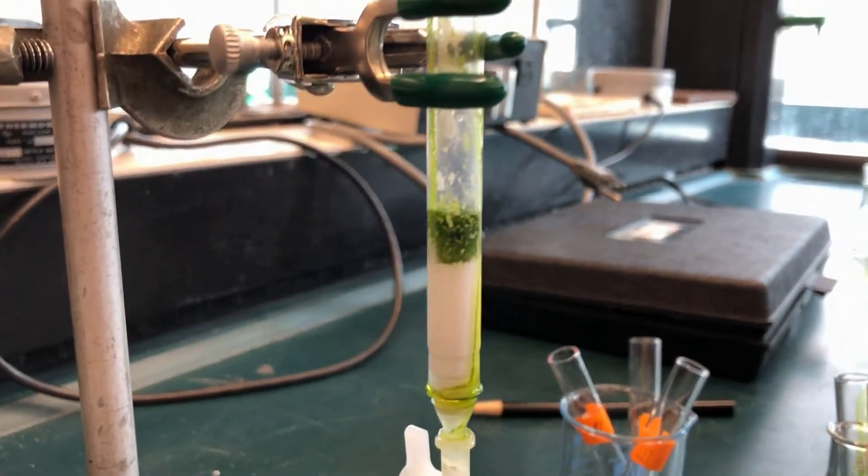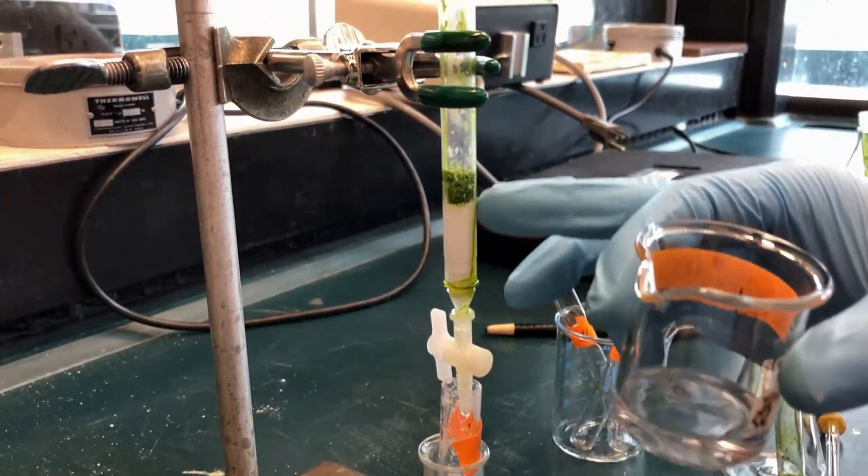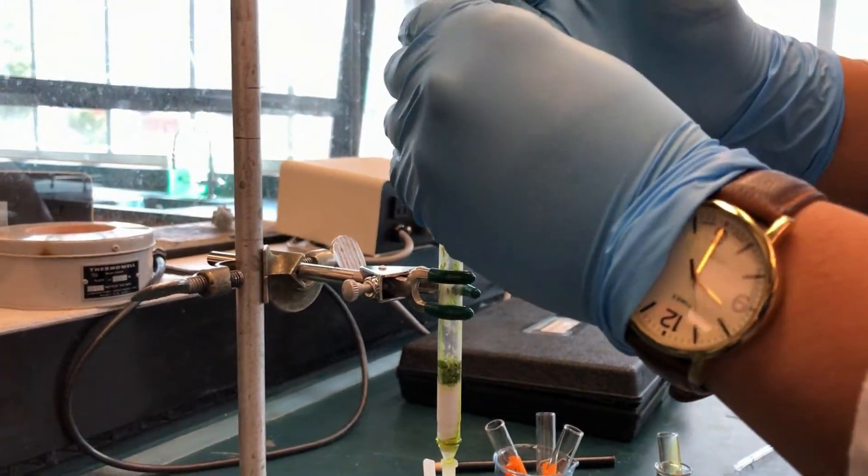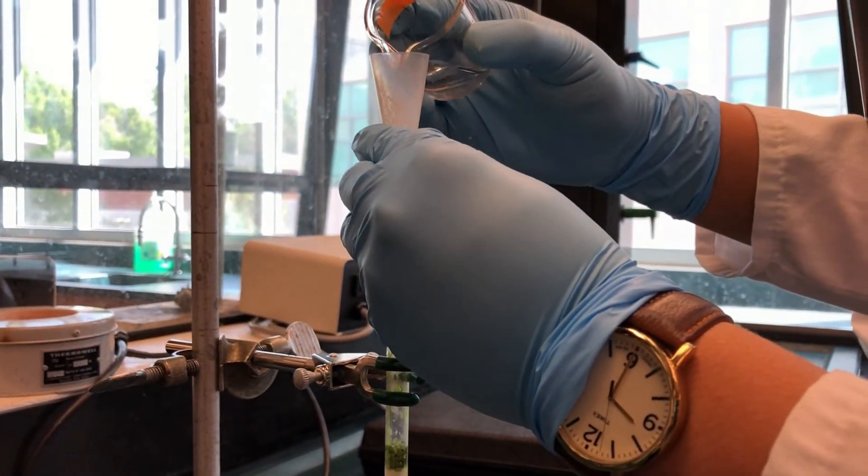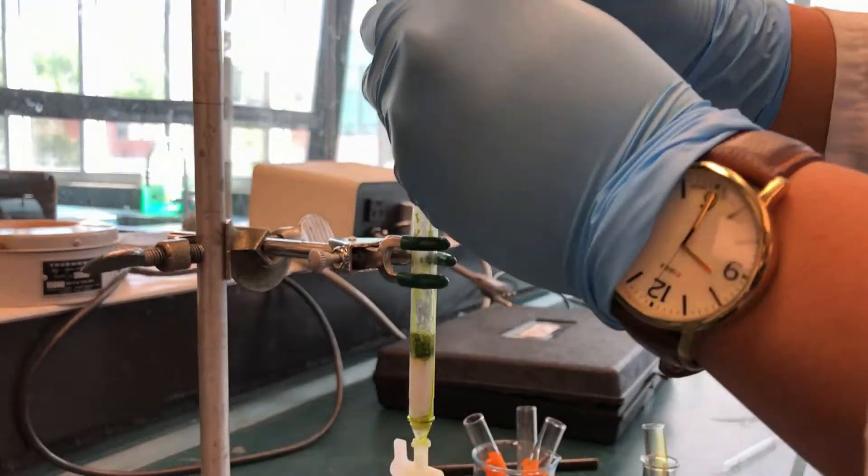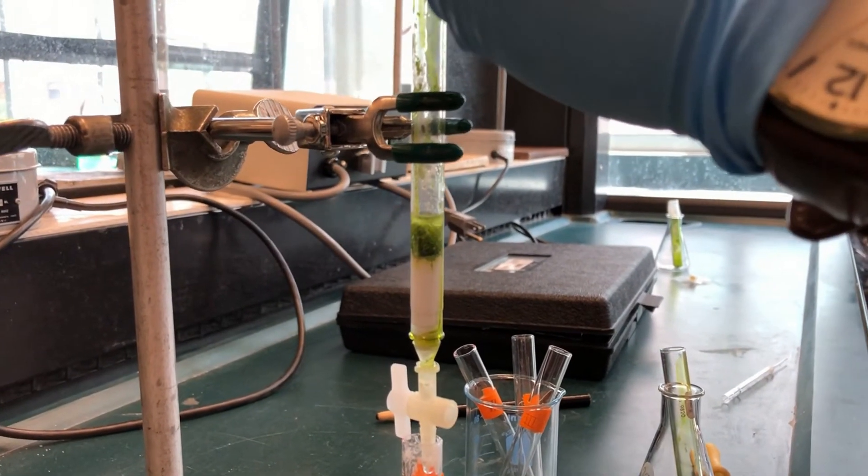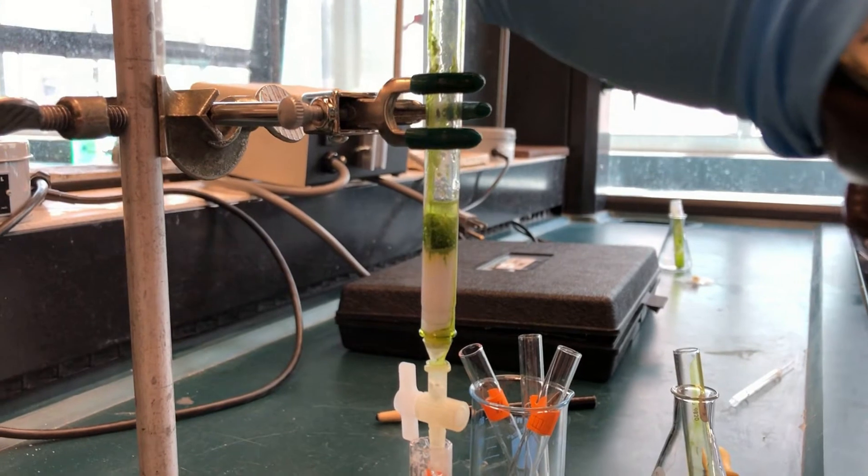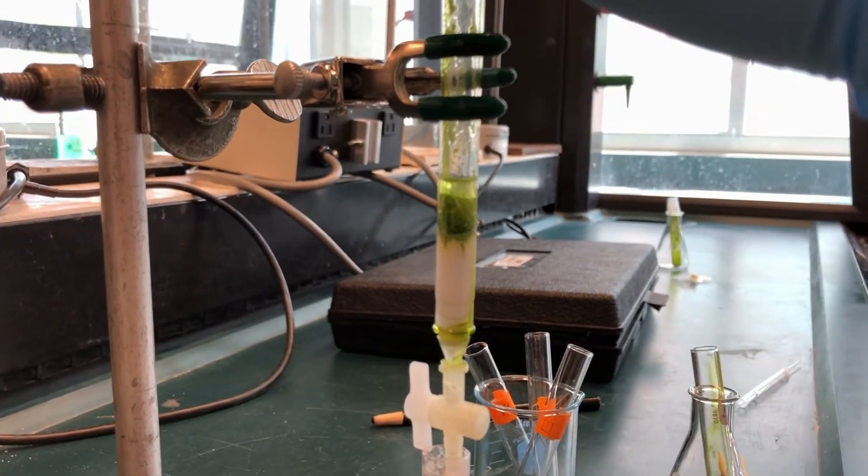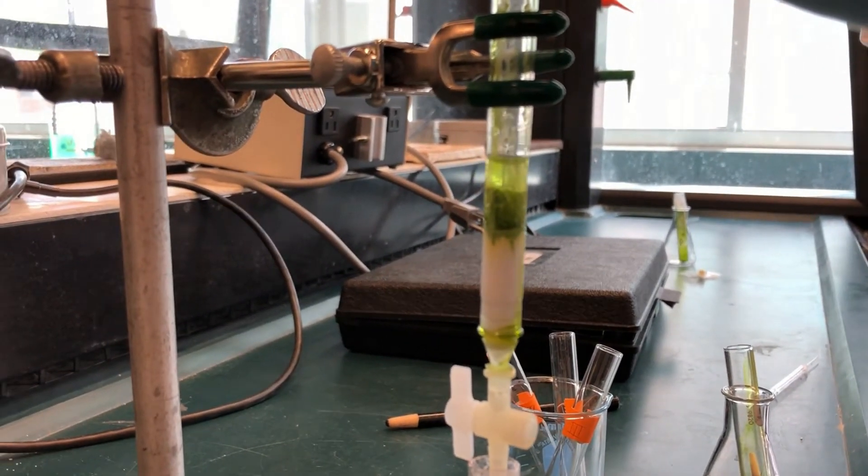Make sure the column does not get dry. Once the green solution has seeped into the alumina, add more petroleum ether. If the yellow band begins to separate from the green band, continue to add petroleum ether until the yellow band gets near the bottom of the column and then collect it in test tube 2.